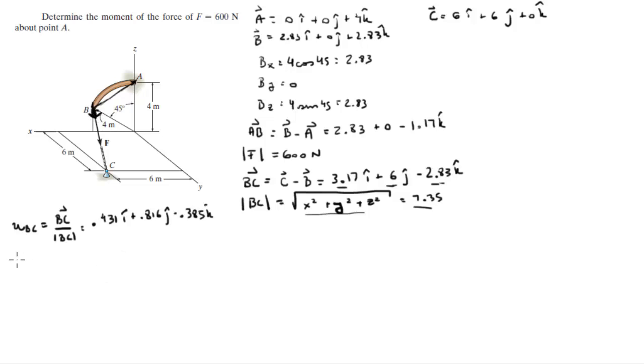So to get the Cartesian vector form of F, you're going to multiply the magnitude of F times this unit vector BC. So you're going to multiply these values, this is negative, times the 600N and you're going to get the Cartesian vector form of F which comes out to be 258.6 in the I plus 489.6 in the J minus 231 in the K.